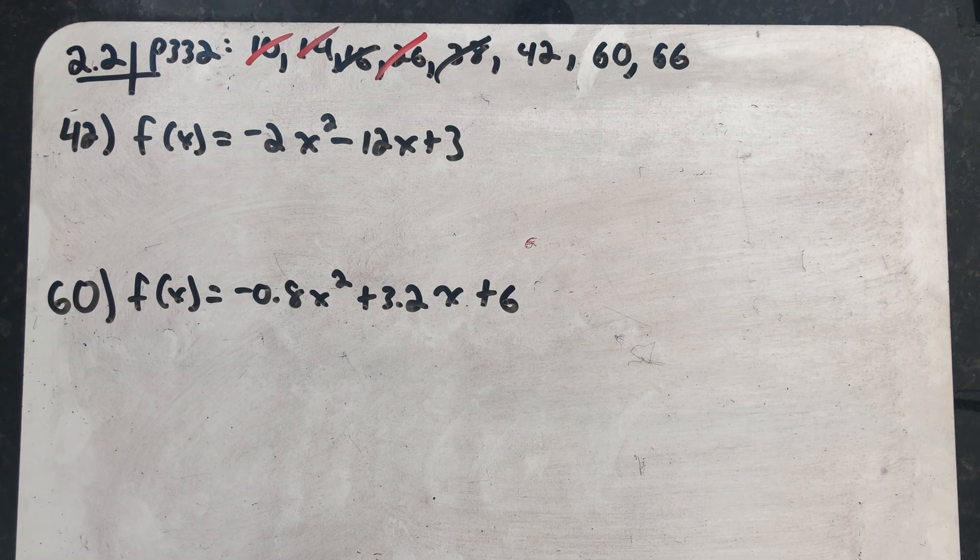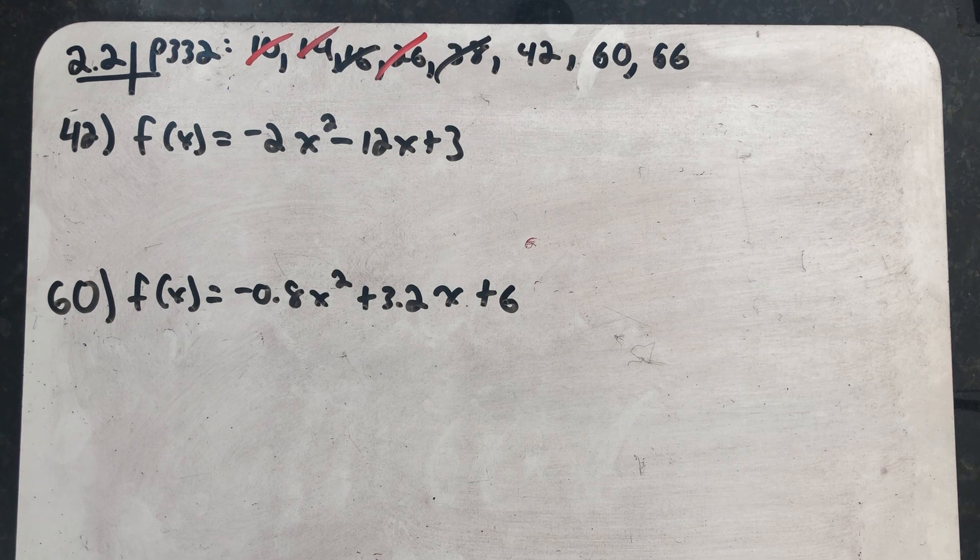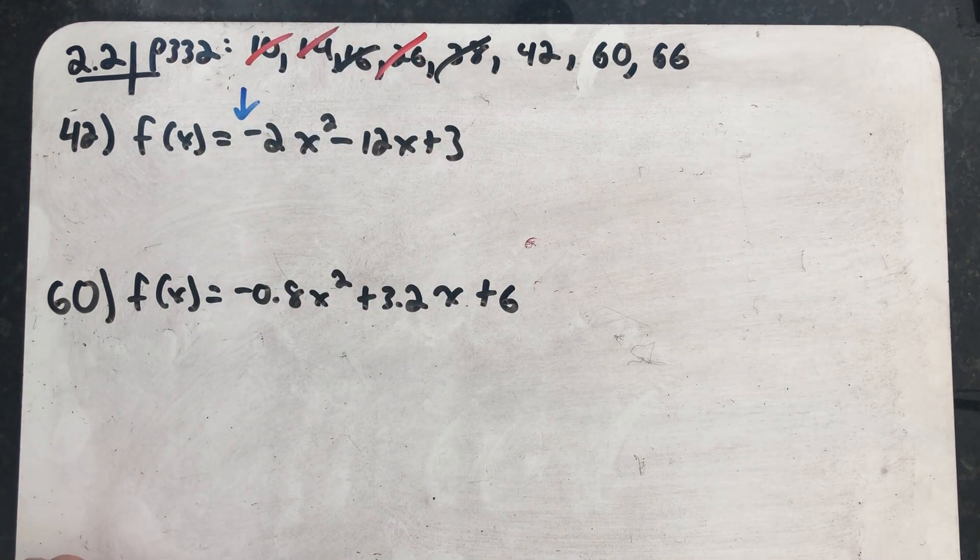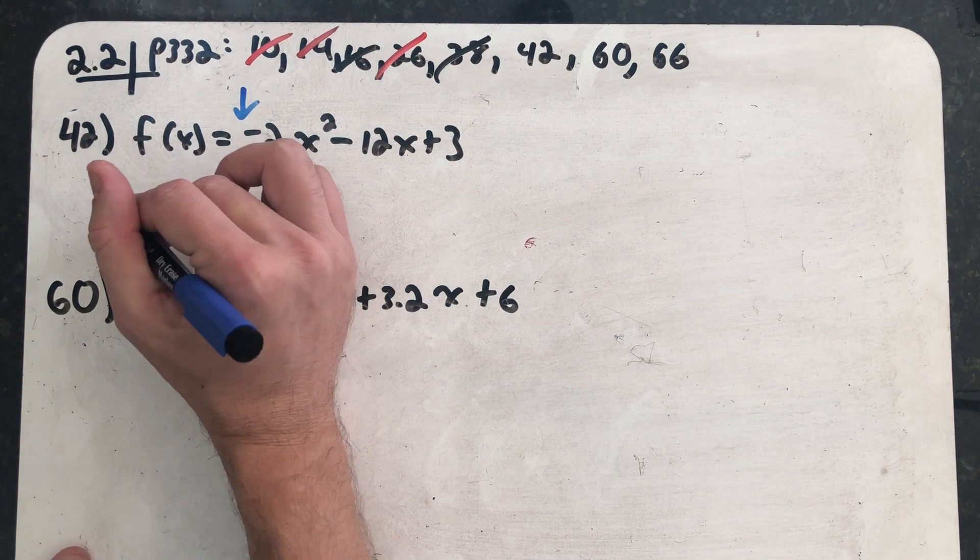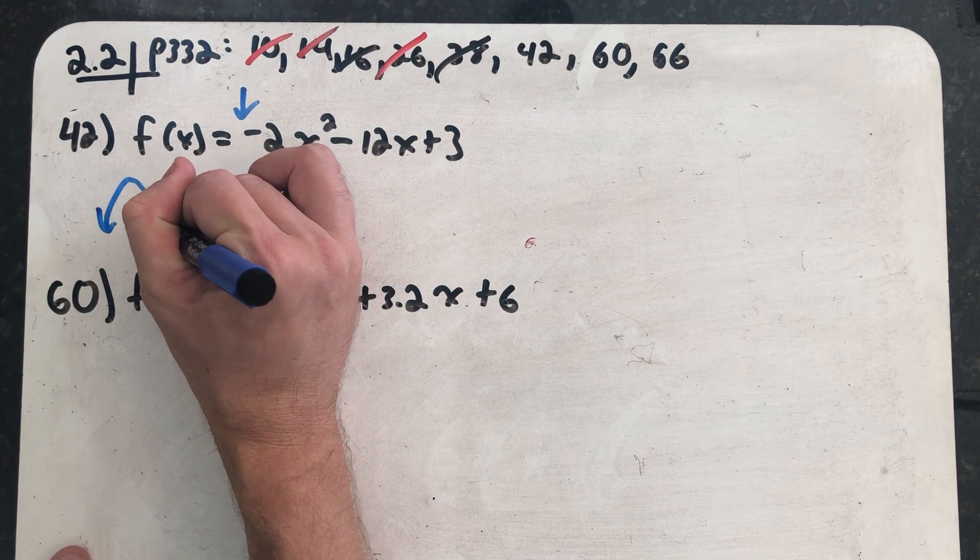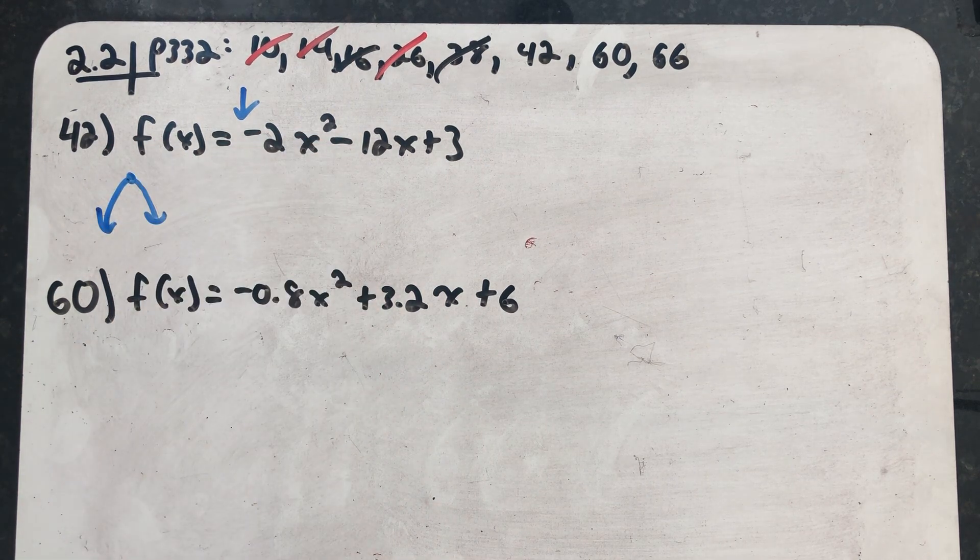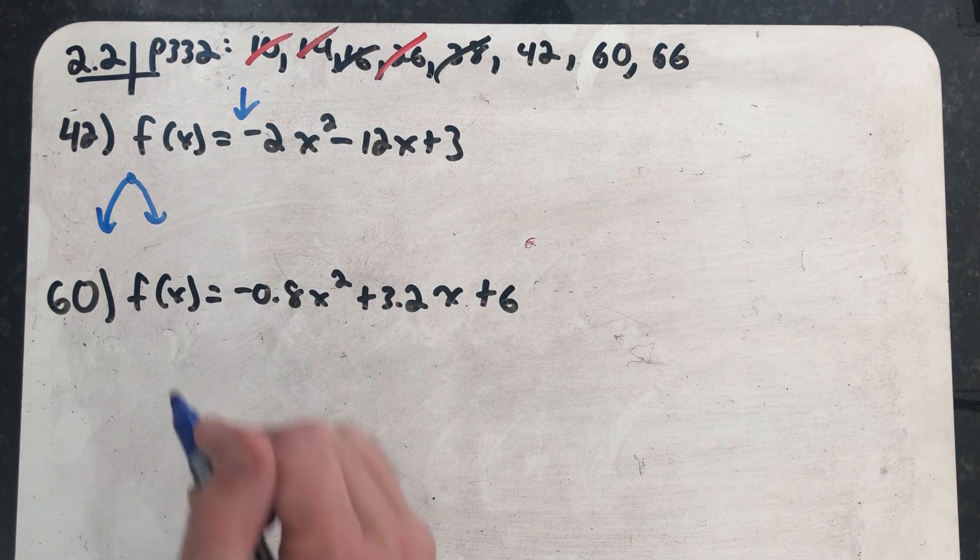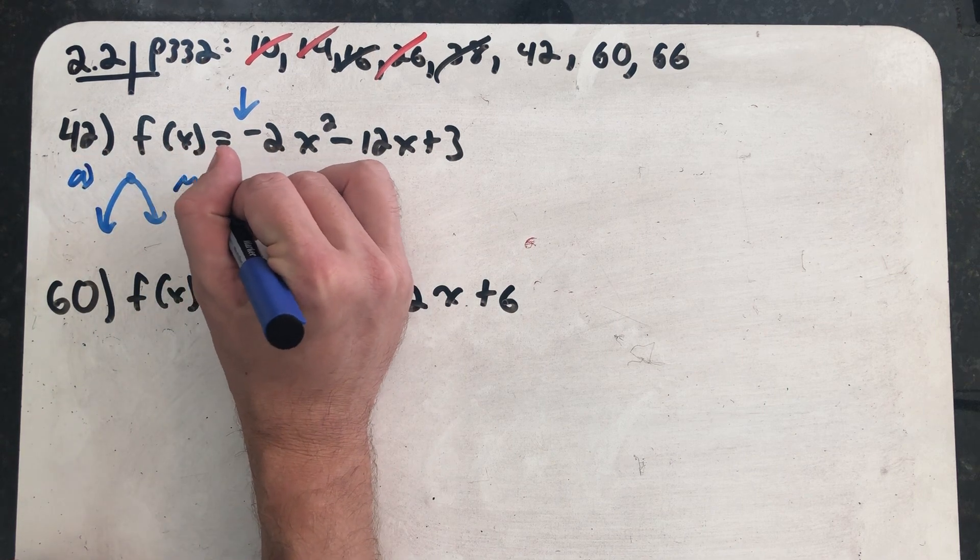In part A, when I'm supposed to think about whether this function will have a min or a max, I just need to know whether this parabola opens up or down. This parabola is going to open downward, which means this vertex will be at a maximum value. So in part A, I do know that there will be a maximum.